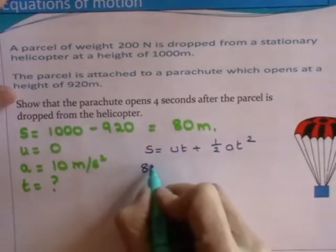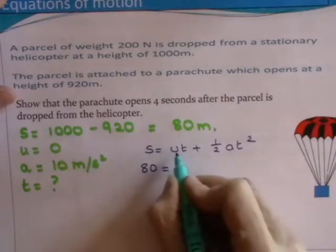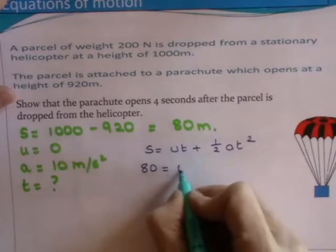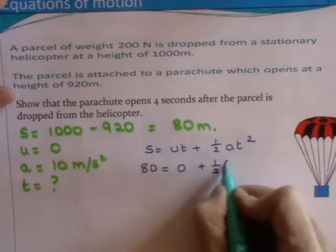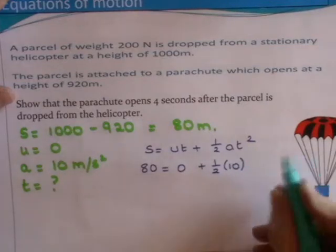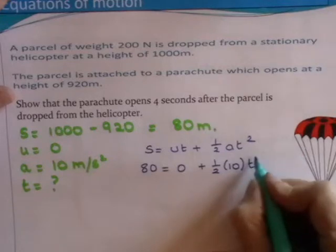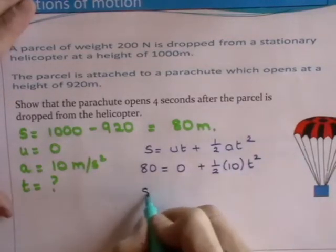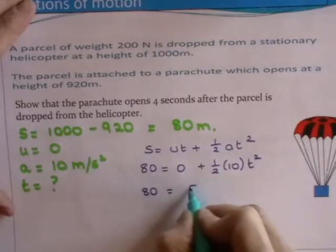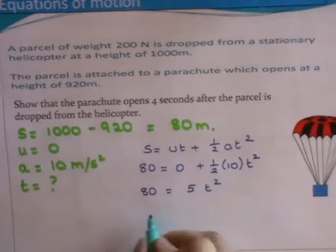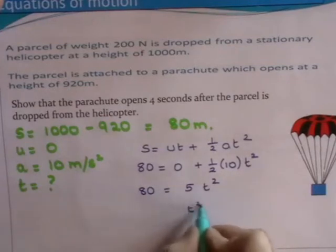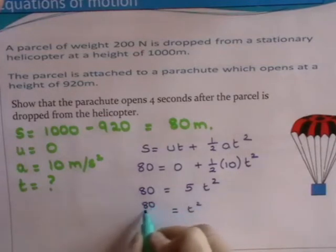S is 80, u is zero, so zero times t is zero. Plus a half, it's been accelerated at a rate of 10 meters per second squared, and we're looking for a value for t. So 80 is equal to 5 times t squared, and t squared then is equal to 80 over 5, which gives you 16.